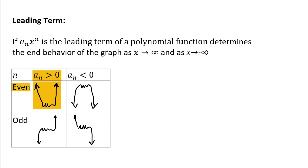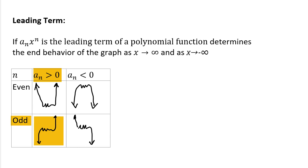If we have an even degree and a positive coefficient, it looks basically like a quadratic — the end behavior goes up. If the degree is even and the leading coefficient is negative, it's the upside-down parabola. If the degree is odd and the leading coefficient is positive, it resembles the cubic function. If the degree is odd and the leading coefficient is negative, it's the flip of the cubic function.